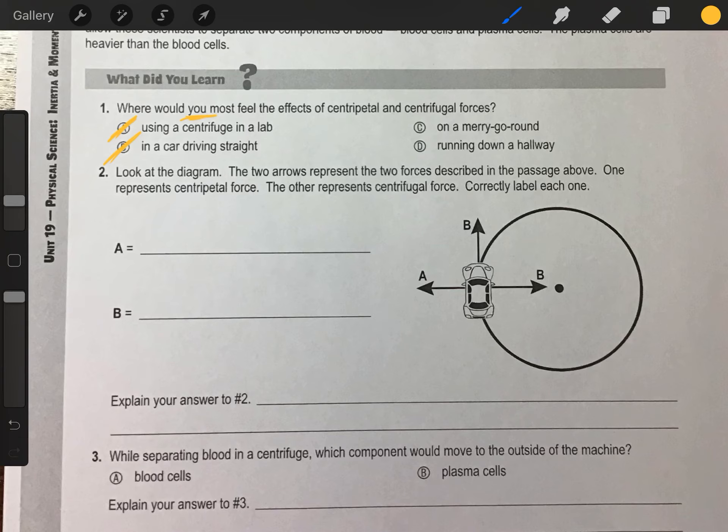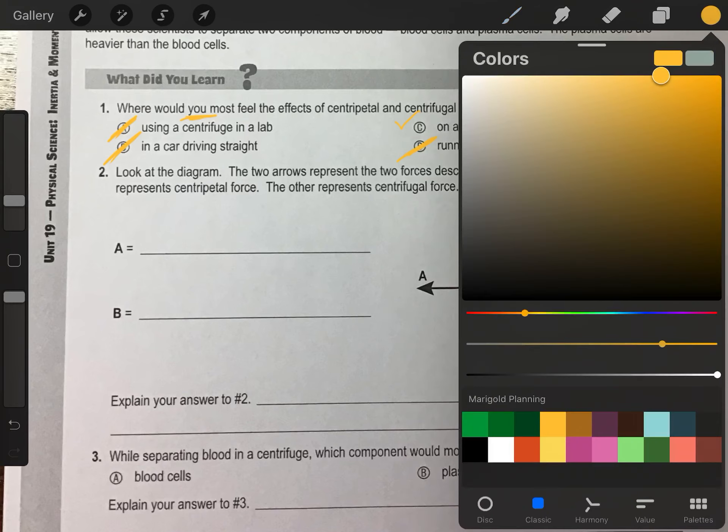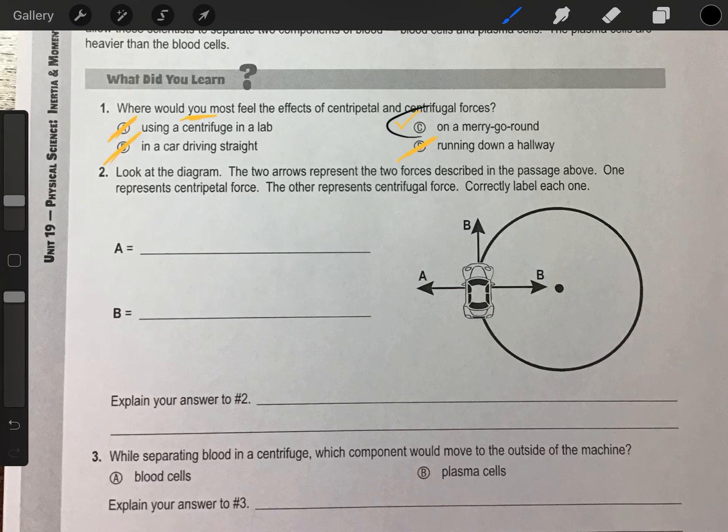C, on a merry-go-round. So far, this one sounds the most correct because on a merry-go-round, you are moving in a circle. So it's most likely that you're actually feeling the effects of centripetal and centrifugal forces. D, running down a hallway. No, we're not moving circular at all. So we have found our answer of C.